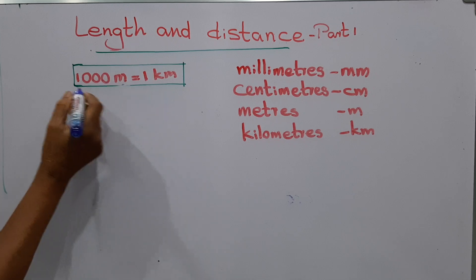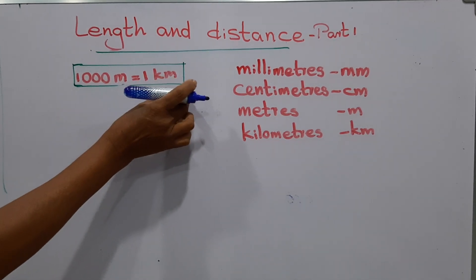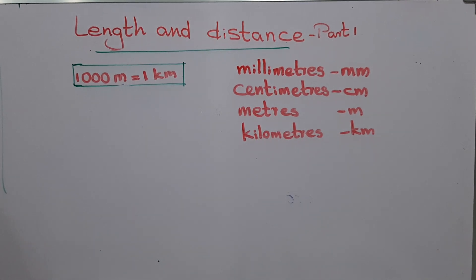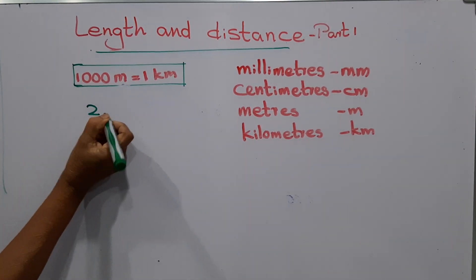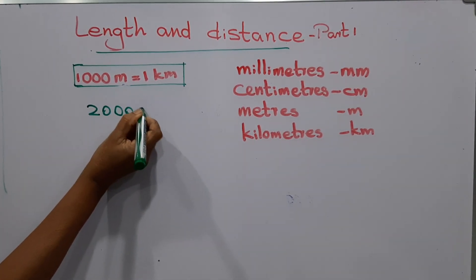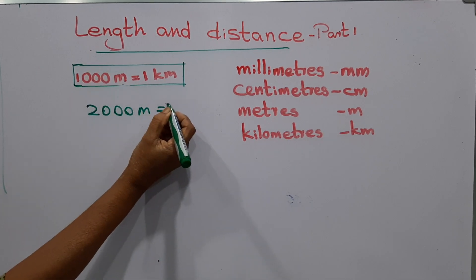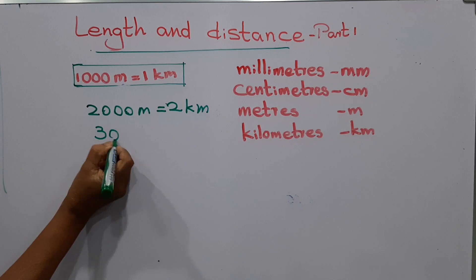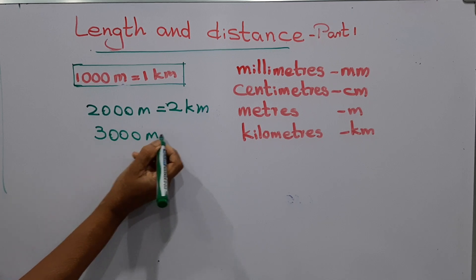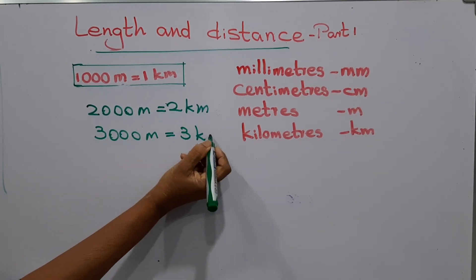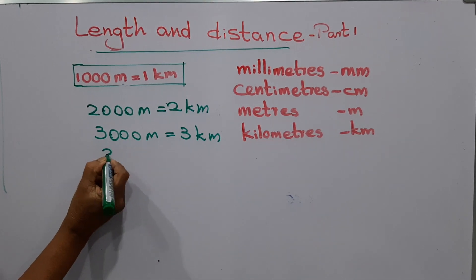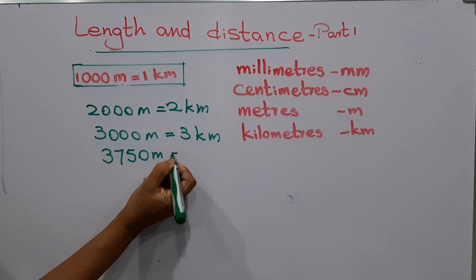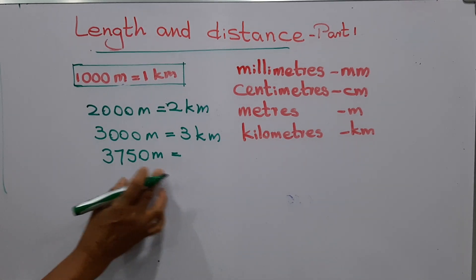This is the connection: one thousand meters equal one kilometer, two thousand meters equal two kilometers, three thousand meters equal three kilometers. Then three thousand seven hundred and fifty meters equals...